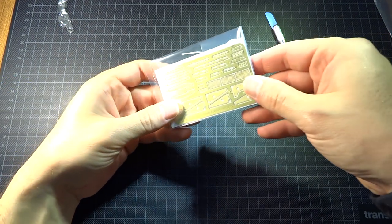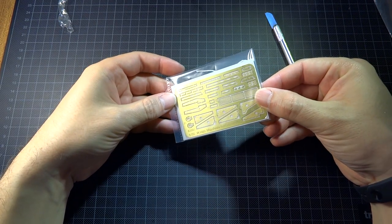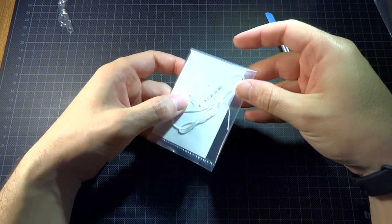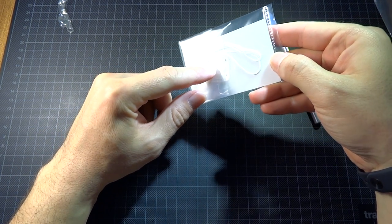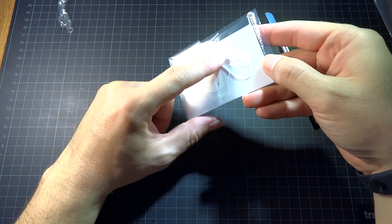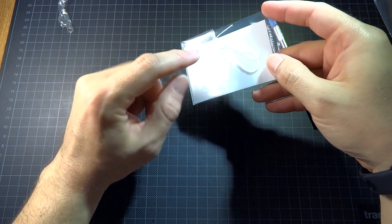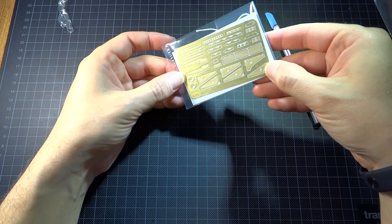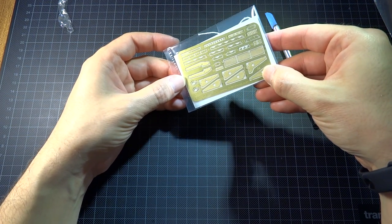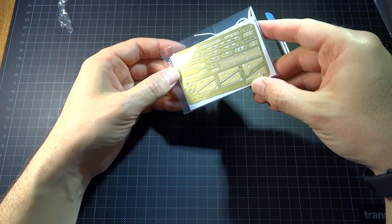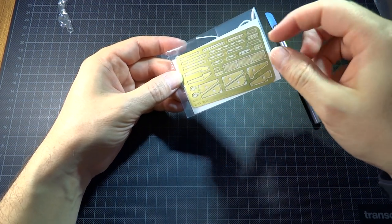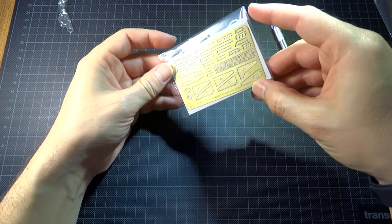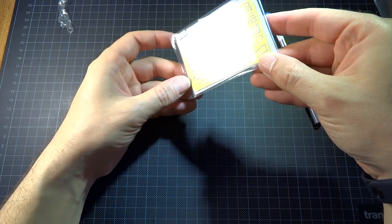We're looking at the photo etch sheet. There's a clear parts sheet for vision slots. There are 24 photo etch parts for grills and some other parts. It's okay - I think it will give very good detail to the kit.